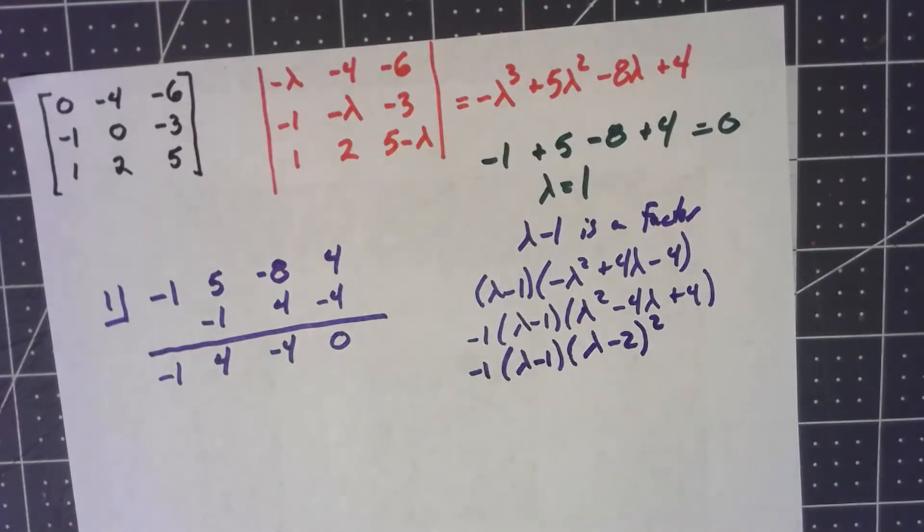I never like having my leading coefficient be negative, so let's go ahead and just factor out a negative one. That'll leave lambda squared minus four lambda plus four, which factors as lambda minus two squared. So similar to the last one, we don't have three distinct eigenvalues; we only have two eigenvalues, one and two. That means we're not guaranteed to be able to do this, but there is still a possibility that we can.